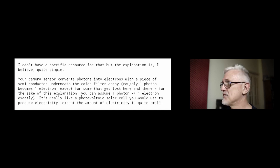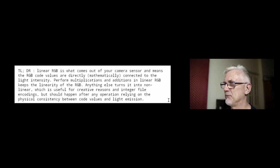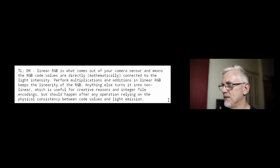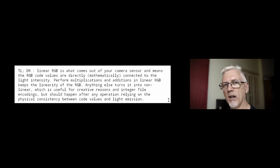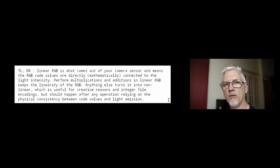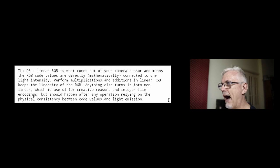Before I read this whole email, let's just go down to the end of it, because I want to read the last paragraph. Linear RGB is what comes out of your camera sensor, and it means that the RGB code values are directly — or in other words, mathematically — connected to the light intensity. Perform multiplications and additions in linear RGB, and that will keep the linearity of the RGB. Anything else turns it into non-linear, which is useful for creative reasons and integer file encodings, but it should happen after any operation that relies on the physical consistency between code values and light emissions.